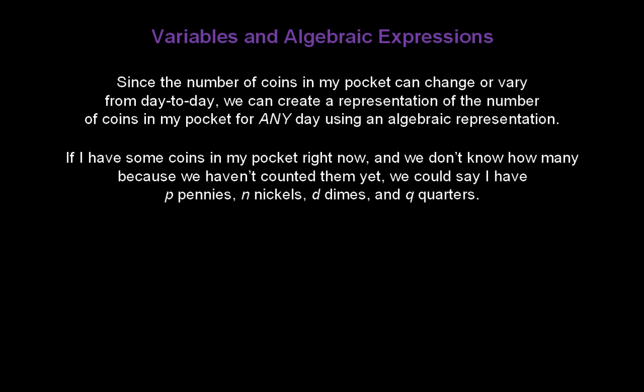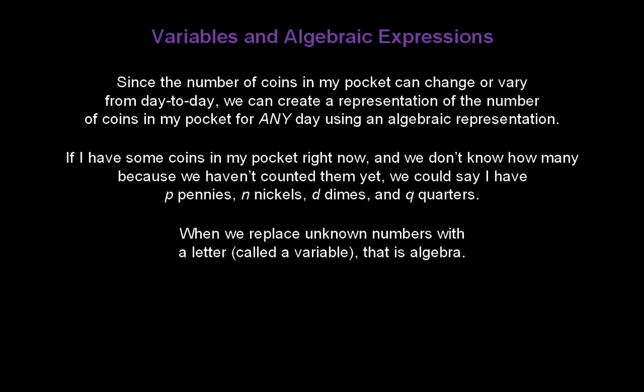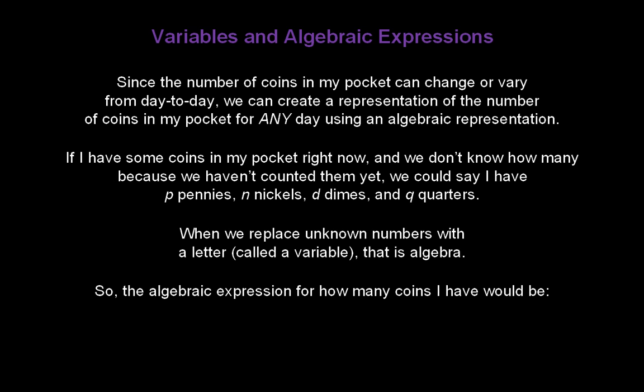If I have some coins in my pocket right now and we don't know how many because we haven't counted them yet, we could say I have p pennies, n nickels, d dimes, and q quarters. I can use letters to represent the numbers of each of those coins before I count them. When we replace unknown numbers with a letter called a variable, that is algebra. So the algebraic expression for how many coins I have would be p plus n plus d plus q.